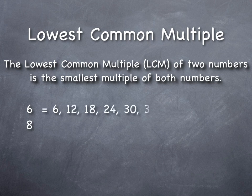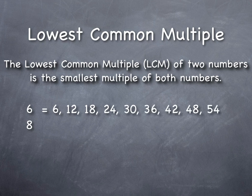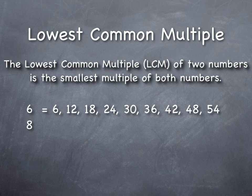Six times one is six, six times two is twelve, six times three is eighteen, twenty-four, thirty, thirty-six. And, you know, it's kind of like counting up by six. And the same thing for eight.